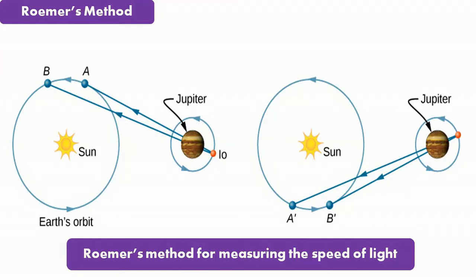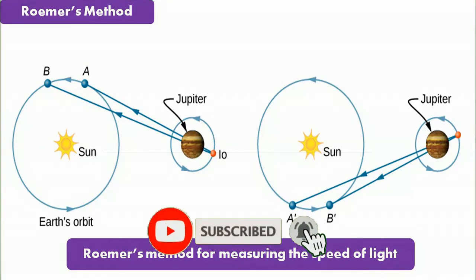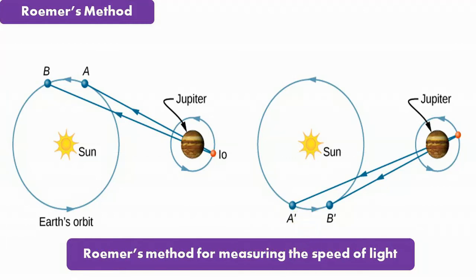This experiment is important historically because it demonstrated that light does have a finite speed and provided an estimate of this speed.